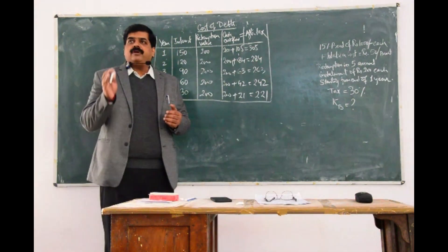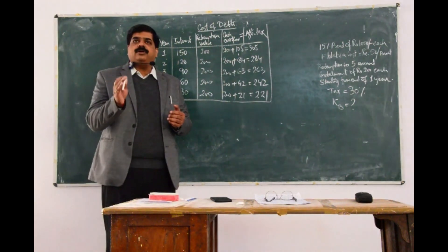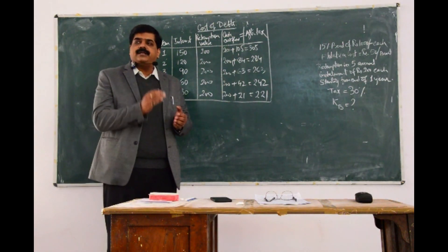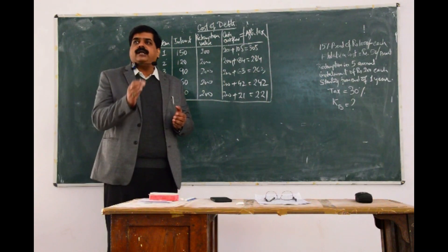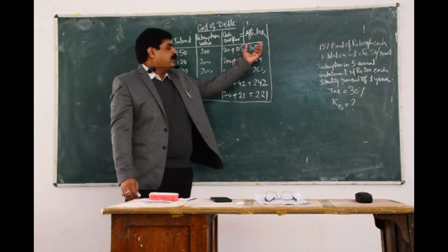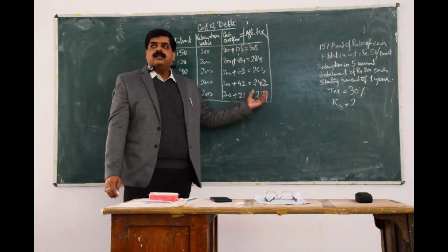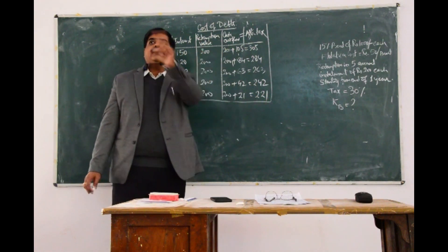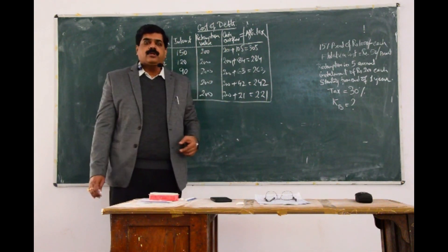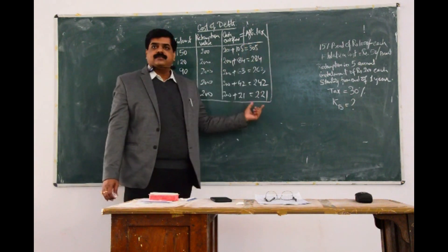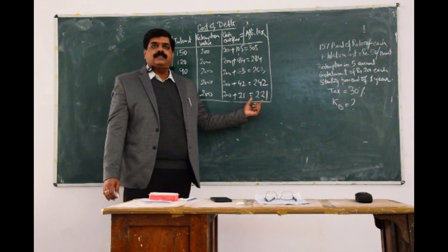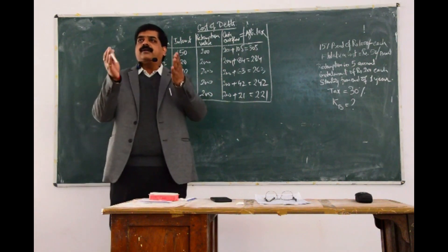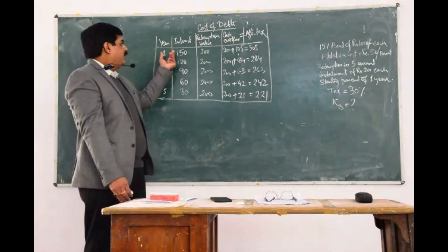Earlier we calculated cost of debt from the interest amount alone. But here, along with the interest, the redemption value of ₹200 has to be considered. So we calculate the cost of debt from this cash outflow using the trial-and-error method, framing a table for years 1 to 5.